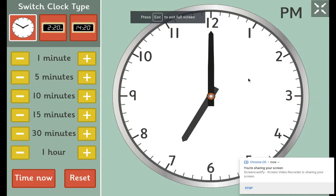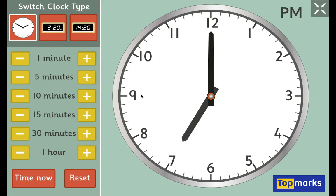Let's have a look at the time. At the moment, we've got the small hand on the 7, which means it's the 7th hour, so it's 7 o'clock. This is the hour hand, and then we've got the big hand on the 12. So at the moment, we are at 7 o'clock, and up here we can see it says PM, so that means it's 7 o'clock in the evening.